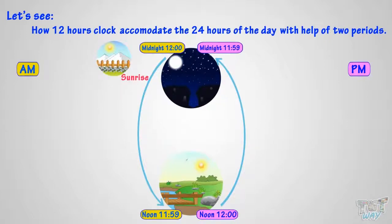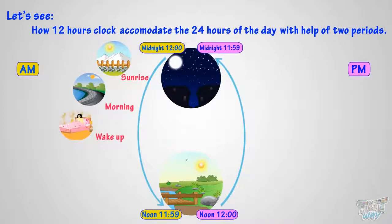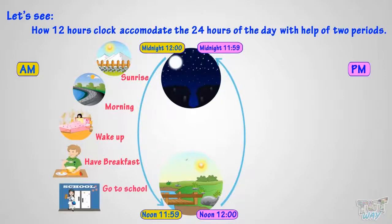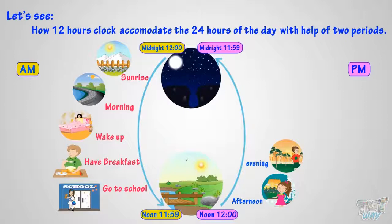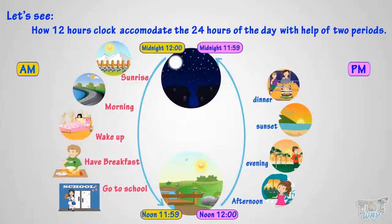Sunrise — a.m. Morning — a.m. Wake up — a.m. Eat breakfast — a.m. Go to school — a.m. Afternoon — p.m. Evening — p.m. Sunset — p.m. Eat dinner — p.m. Go to bed — p.m. Now let's learn what the 24-hour clock system is.